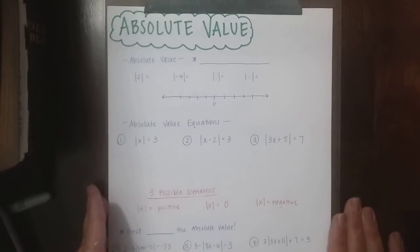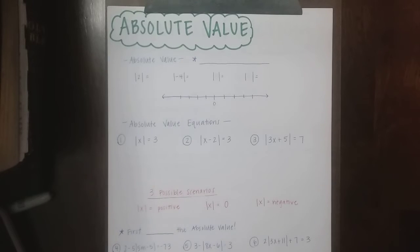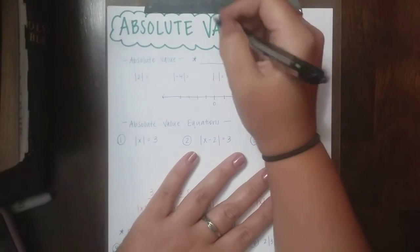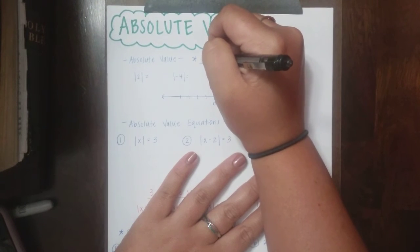For our next video, we're going to look at absolute value. First we've got to talk about what absolute value means. Absolute value is the distance from zero.